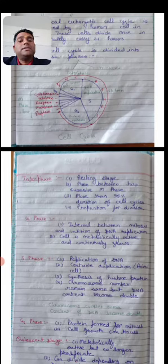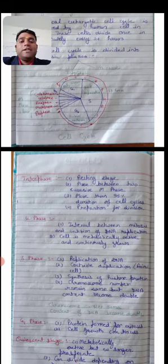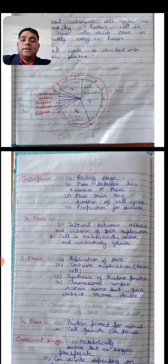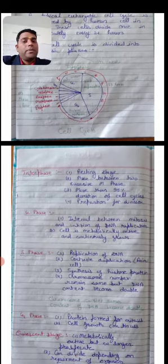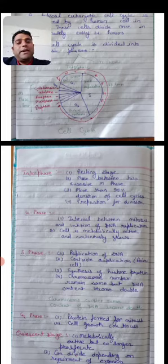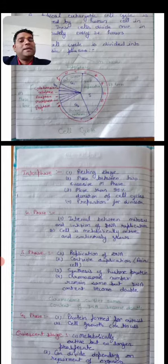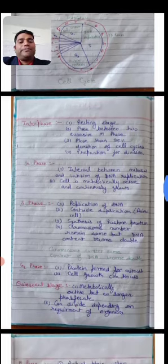As you can see in the diagram, interphase has G1 phase, S phase, and G2 phase. G1 phase is cell growth. In S phase, DNA replication takes place — meaning one DNA becomes two. In G2 phase, histone protein and non-histone protein are formed. This completes the process of interphase. The next process is M phase, which is divided into four parts: prophase, metaphase, anaphase, and telophase. These four processes are called karyokinesis. The next step is cytokinesis, in which the cytoplasm is divided.